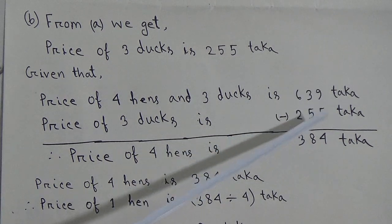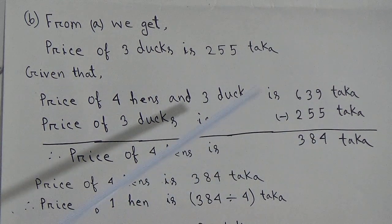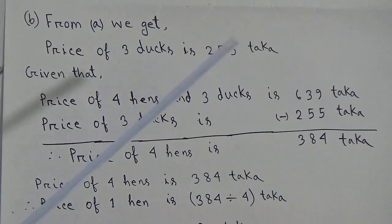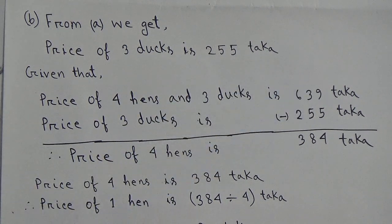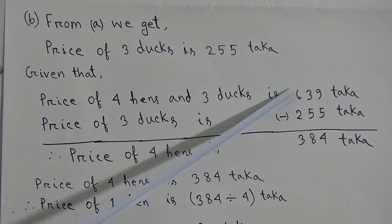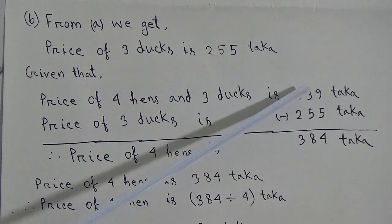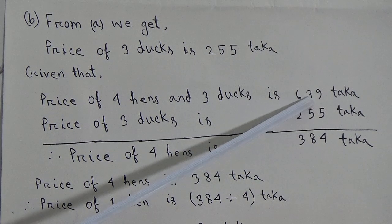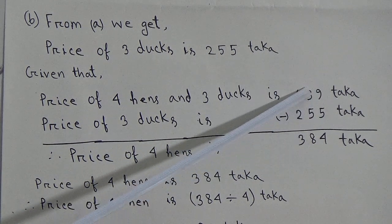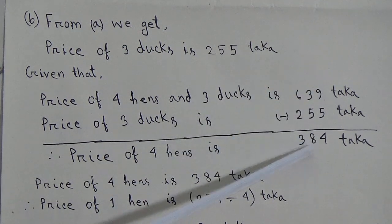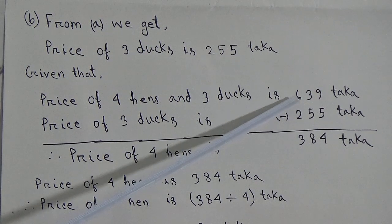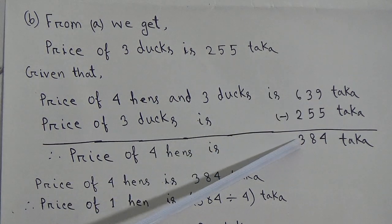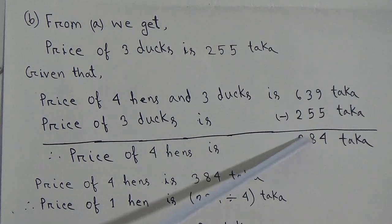Now, 9 minus 5 is equal to 4. Next, we have to subtract 5 from 3, but it is not possible because 5 is greater than 3. So we have to borrow 100 from the hundreds place, which becomes 10 tens in the tens place. 10 tens plus 3 tens is equal to 13 tens. That means we subtract 5 from 13: 13 minus 5 is equal to 8. Since we have already borrowed 100, the hundreds digit is now 5. So 5 minus 2 is equal to 3. Therefore, the price of four hens is TK384.